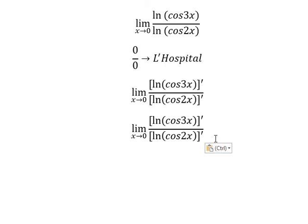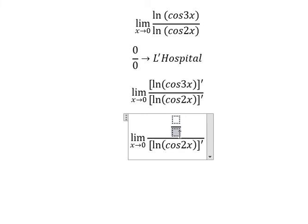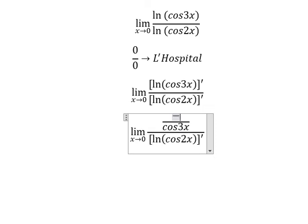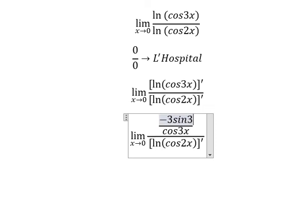So if we do first derivative here we will have cosine 3x times negative three sin 3x. Similar for this one.